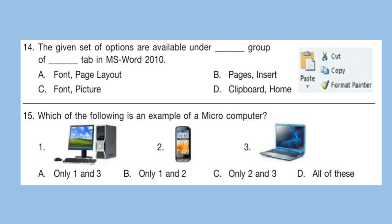Question 15: Which of the following is an example of a microcomputer? Look at the options carefully and select your answer. The correct answer is option D — all of these. A computer which is designed for individual use and contains a microprocessor as its central processing unit is called a microcomputer. All other options in the question are designed for individual use and have a microprocessor, so all of these is the correct answer.